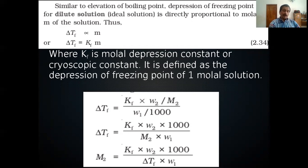The cryoscopic constant, or molal depression constant K_f, is the depression of freezing point of a one molal solution. The aim of colligative property measurement is to determine the molecular mass of an unknown solute. From ΔT_f = K_f × m, we can derive an equation to calculate the molecular mass of the solute.